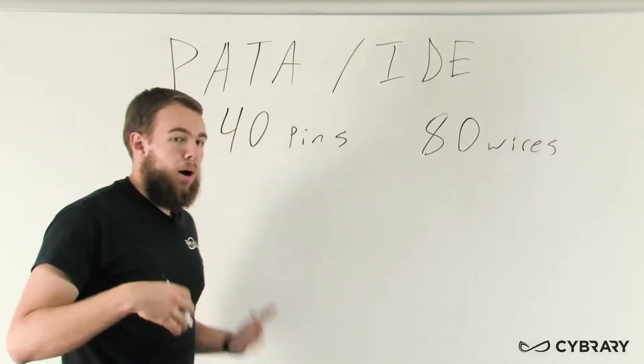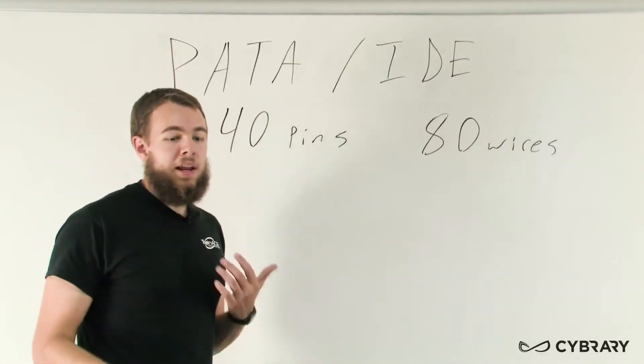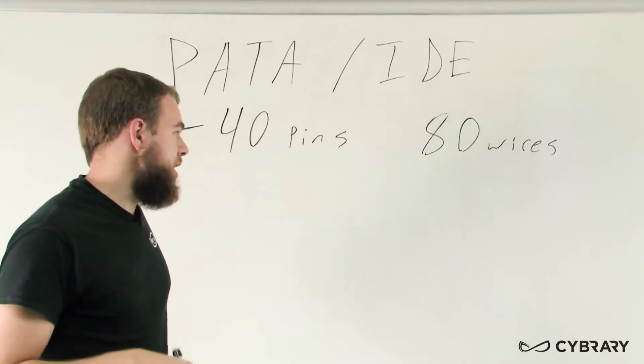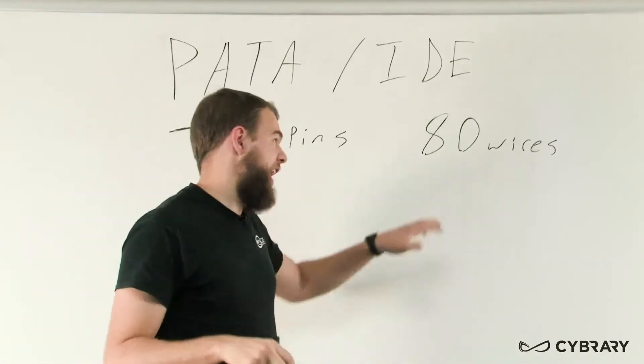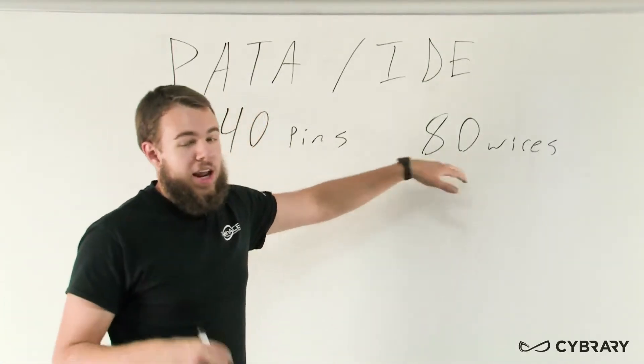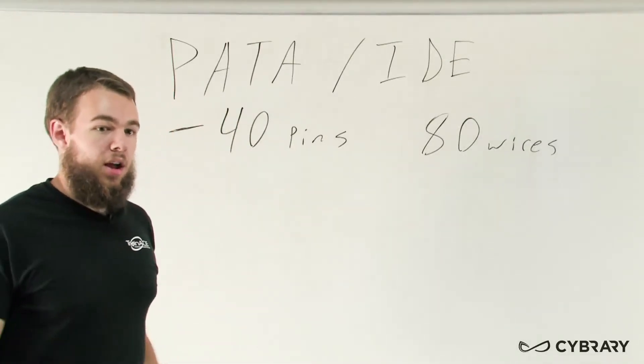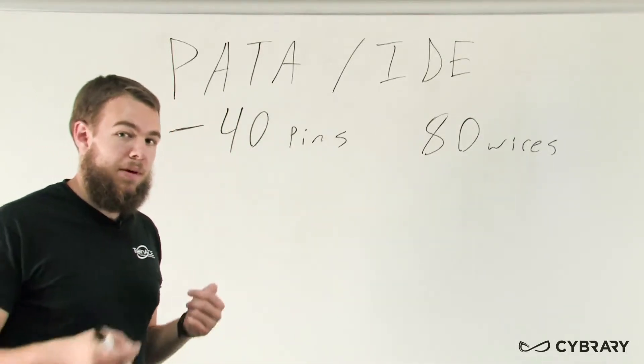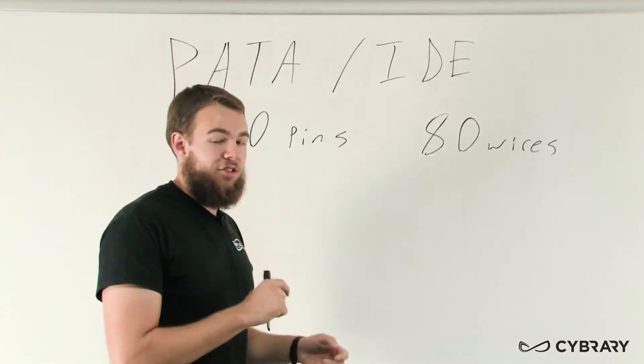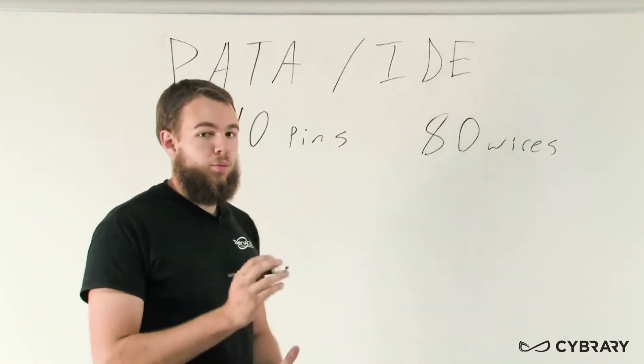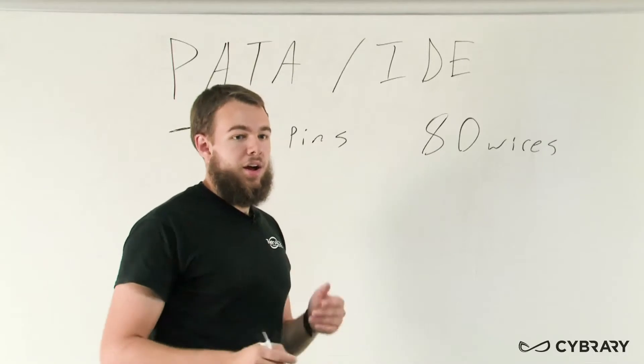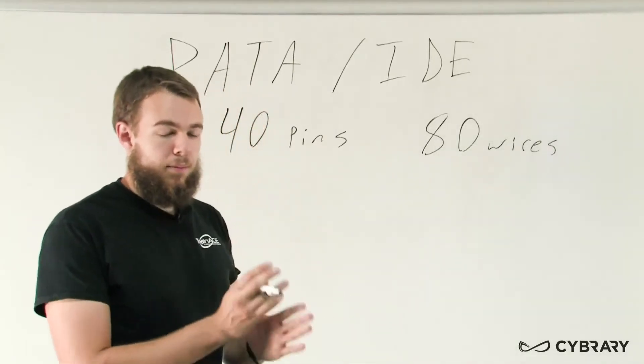For modern usage of IDE PATA cables, we want to use the version that has 80 wires. The 80-wire version allows us to have a better connection with less crosstalk and faster speeds because it uses additional wires for each connection, basically as ground wires.